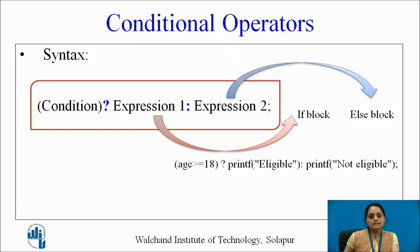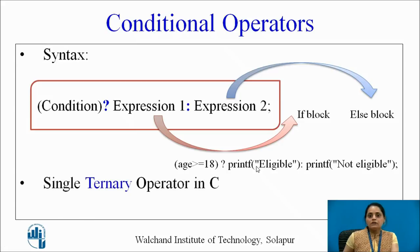The same voting program can be written using the ternary operator: if the age is greater than or equal to 18, then display that the person is eligible for voting, otherwise display that the person is not eligible. This is the single ternary operator used in C language. Conditional operators can also be nested, which we will look into in the next video.